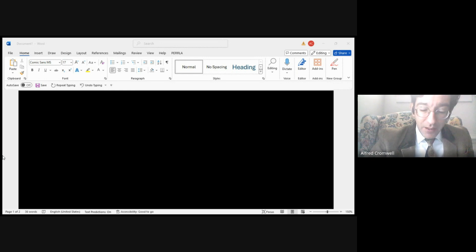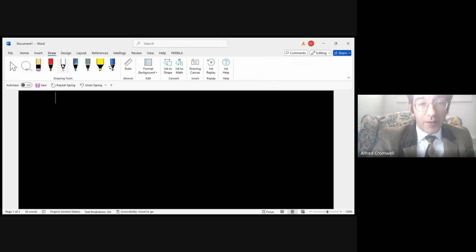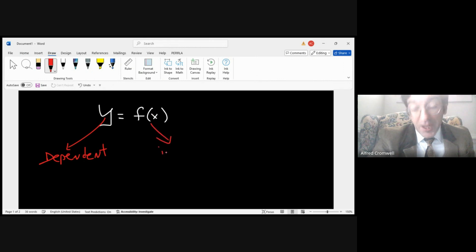Functions are typically labeled as y = f(x). The y is called the dependent variable or the output, meaning that y will depend on what you put into f(x). This is the dependent variable, and x is called the independent variable or the input.